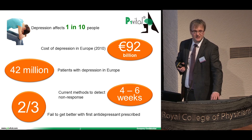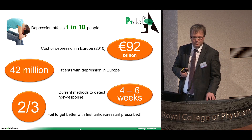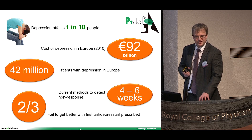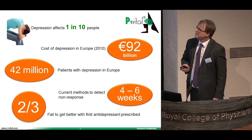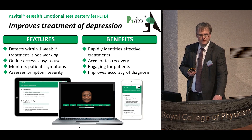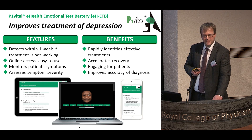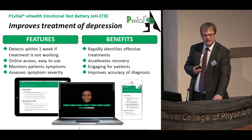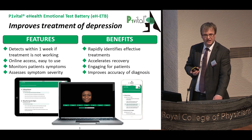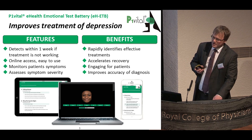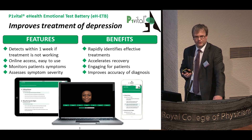A US study demonstrated that for the first antidepressant prescribed, two-thirds of depressed patients did not respond. Our solution is a computerized test based on research from the Department of Psychiatry at the University of Oxford. It will rapidly reduce that cycle time from four to six weeks down to one week, enabling patients to get on the right treatment far quicker and improve patient outcomes.